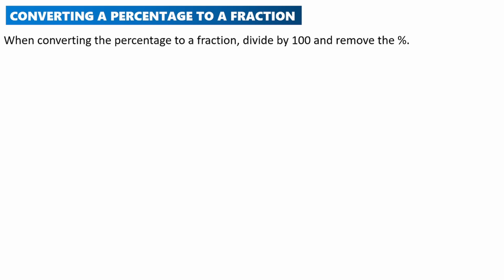Let's look at how to convert a percentage into a fraction. When converting a percentage to a fraction, we divide the number by 100 and remove the percentage sign. For example, question one: express 4 percent as a fraction in its lowest term. So we write 4 over 100.